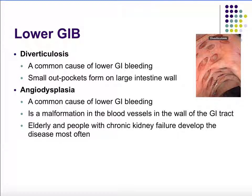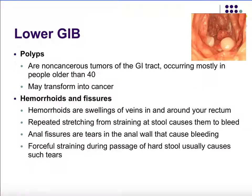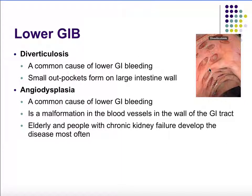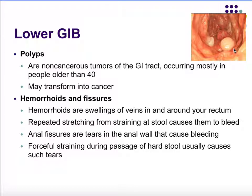Polyps are non-cancerous tumors of the GI tract, more common in people older than 40, that can transform into cancer and lead to bleeding. Unlike diverticulosis which looks like punched-out holes, polyps look like inward growths. Hemorrhoids are swellings of veins in and around the rectum that can bleed from repeated stretching and straining during bowel movements. Anal fissures are small tears in the anal wall caused by forcefully passing hard stools.